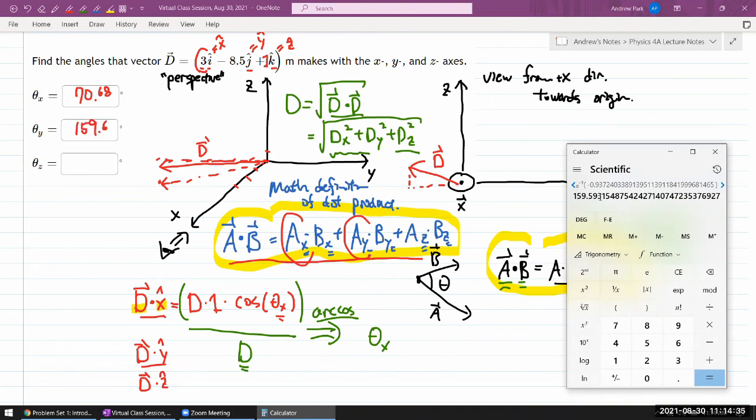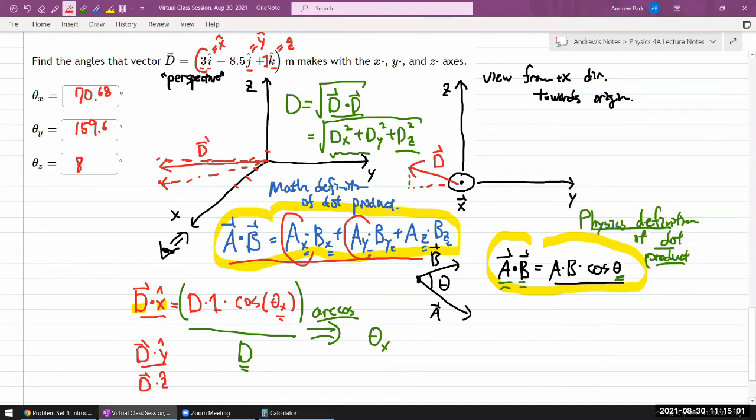Okay, let me finish with z. So z component is going to be 1 divided by, again, the same magnitude as before. That's the ratio. And once I have that ratio, put it through the arc cosine to get the angle. Trigonometry arc cosine. 83.67 degrees.